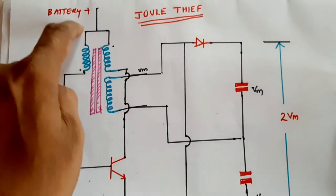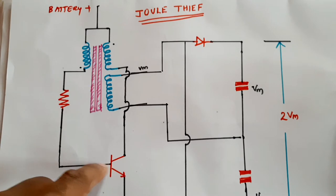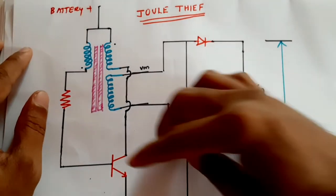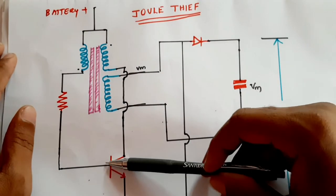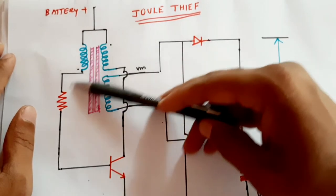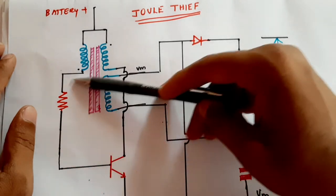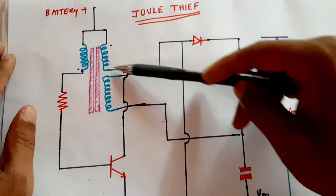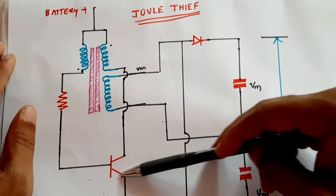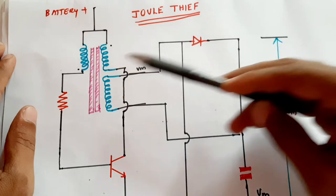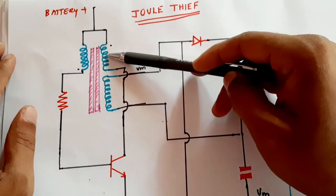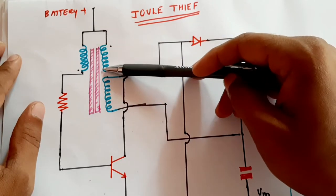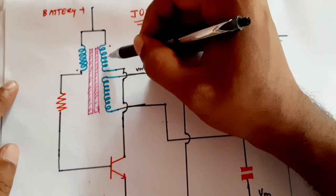When a voltage appears, a small current flows from one side to the other, causing a small base current to flow. When this base current flows, beta times that current will flow through the collector circuit — from the collector side through to the battery. As this current increases, there is a rate of change of current, which generates flux in the core.